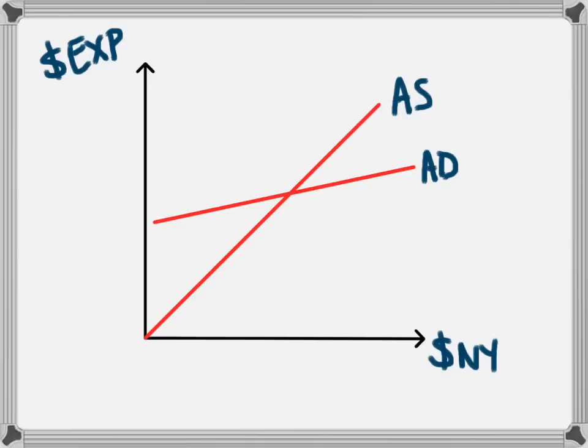The third diagram we need to look at is an aggregate demand and aggregate supply curve. This will show the effect of changes in investment on aggregate demand and national income. There is a related video called 'Expansionary and Contractionary Monetary Policy in an Aggregate Supply and Aggregate Demand Model' which you could watch to understand this video more.